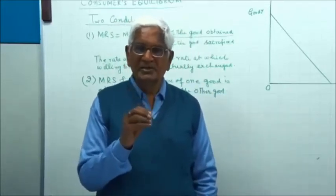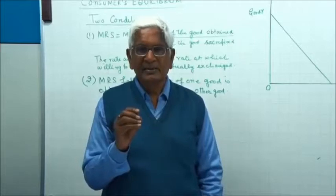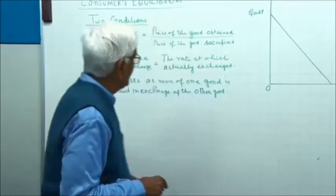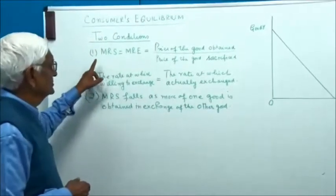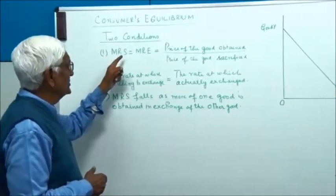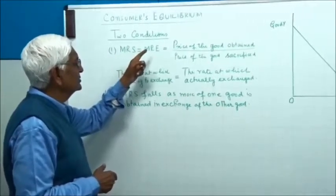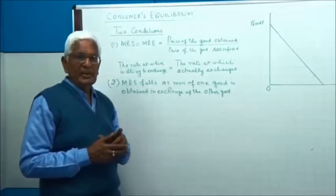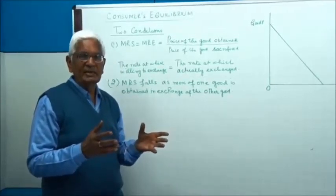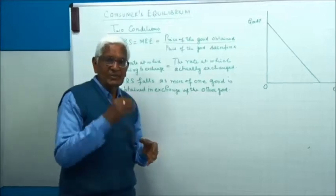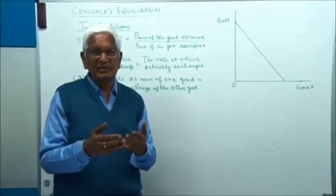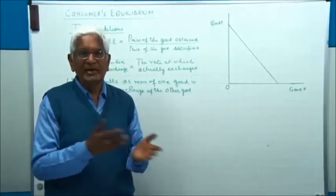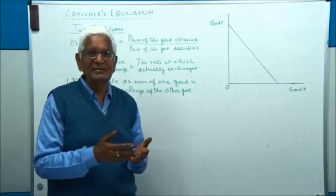There are two conditions of consumer equilibrium. Number one: marginal rate of substitution is equal to market rate of exchange. Remember, we normally say Px upon Py, on the assumption that X is represented on the X axis and Y is represented on the Y axis.